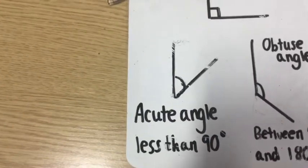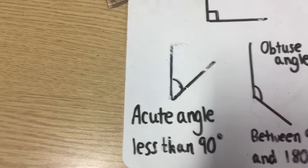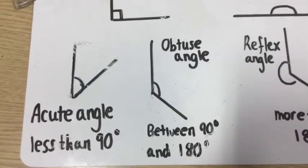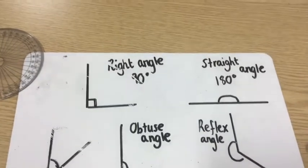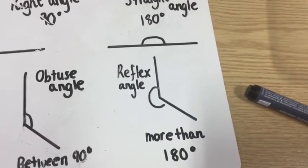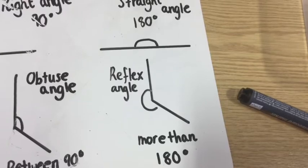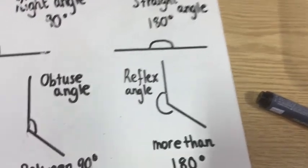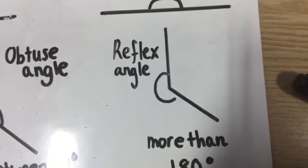Angles smaller or less than a right angle are called acute angles. Angles that are between 90 and 180, so between a right angle and a straight angle, are called obtuse angles. And angles which are more than 180 degrees are called a reflex angle, which is shown by the incomplete circle going round there.